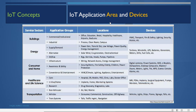IoT application areas include the services sector — buildings such as offices, education, healthcare, airports, and stadiums — using devices like HVAC, fire and safety, lighting, and security access systems. Security access devices allow entry using a card reader. Energy sector applications cover oil, gas, power generation, and distribution using devices like turbines, wind mills, UPS, batteries, generators, and meters.